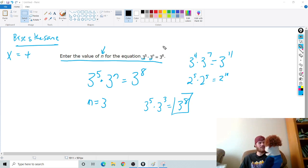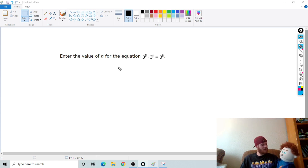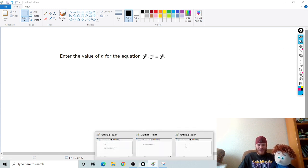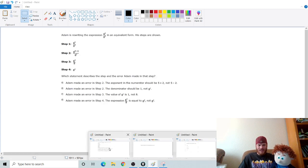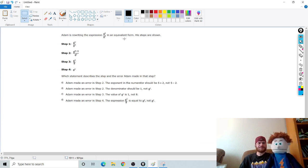What if the base isn't the same? If the base isn't the same, then that's a long, difficult process that you don't want to worry about. Let's look at another one. Adam is rewriting the expression 8 to the 5th over 8 to the 2nd, or 8 squared, in an equivalent form.